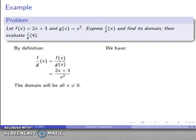What about the value of f over g of 4? Well, by definition, this is the value of f at 4 over the value of g at 4. And I know what f is, I know what g is, and so I can substitute in those values. So f of 4, drop that in here, 2 times 4 plus 3. g of 4, drop 4 into here, that's 4 squared, and that's going to be 11 over 16.